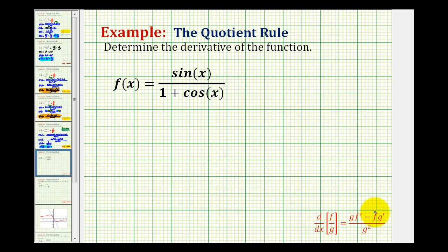And the quotient rule is listed down here in red for reference. So the function in the numerator will be f and the function in the denominator will be g. So to determine f prime of x,